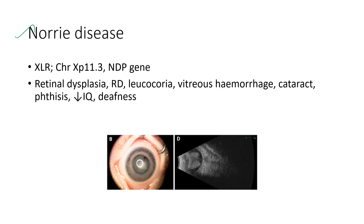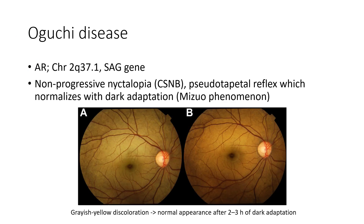Next is Norrie disease. It is an X-linked recessive condition. The clinical features include retinal dysplasia, retinal detachment, leukocoria, vitreous haze, cataract, phthisis, reduced IQ, and deafness.